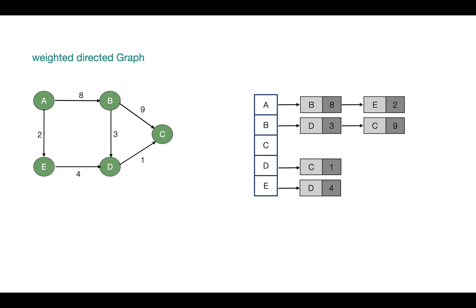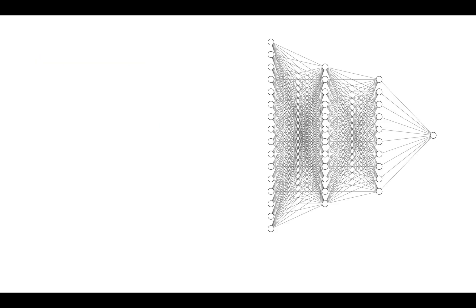So these were the ways in which we can represent a graph. Now let's talk about when to use which representation. If the given graph is a dense graph where a lot of edges are present in the graph, then the adjacency matrix is a good choice because we will be able to utilize the cells with the edge weights.